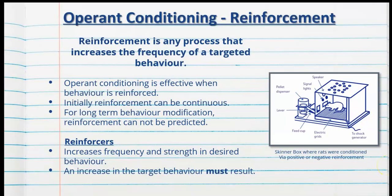Reinforcement is any process that increases the frequency of a targeted behavior. Operant conditioning is effective when behavior is reinforced. Initially when trying to shape a new behavior, reinforcement can be continuous, meaning we reinforce or reward it every single time it's done. But for long-term behavior modification, reinforcement cannot be predicted, so it should turn to an intermittent schedule of reinforcement. We'll cover reinforcement schedules in a future video. A reinforcer is anything that increases the frequency and strength of a desired behavior, but in order to be considered reinforcement, an increase in the target behavior must result.